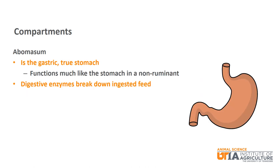The fourth and final compartment is the abomasum. The abomasum is the compartment that functions much like the true gastric stomach of a non-ruminant. Digestive enzymes break down ingested feed here.